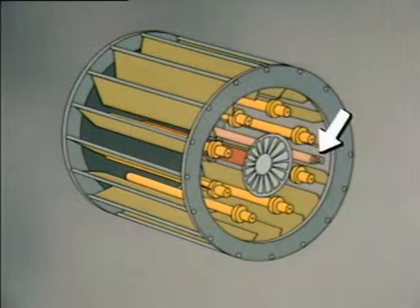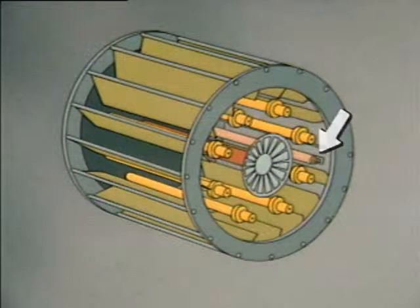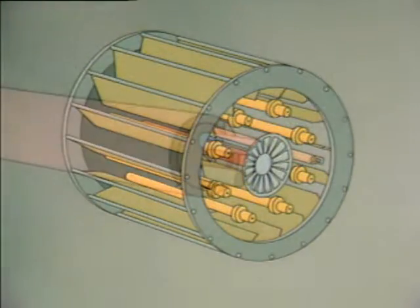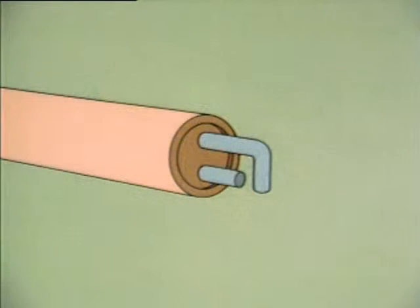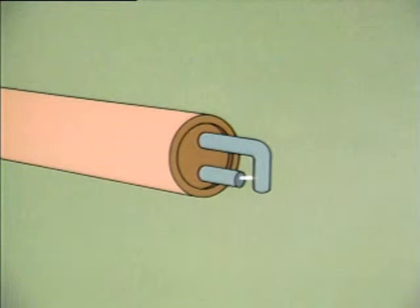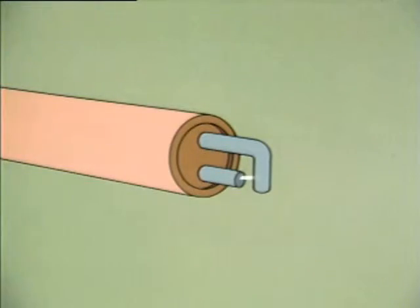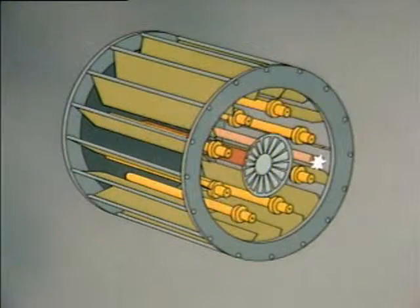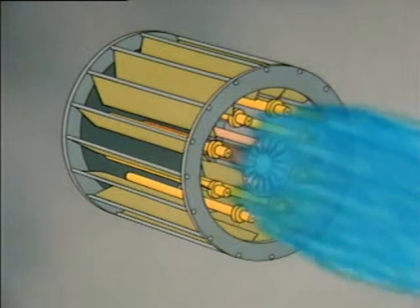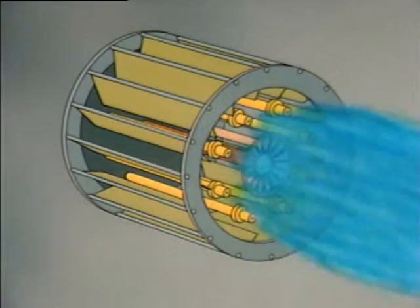An igniter starts the gas-air mixture burning. This one has a sparking device that uses electrical current to create a spark across a pair of electrodes. The spark ignites the gas-air mixture, and as it burns, it provides heat for the boiler.